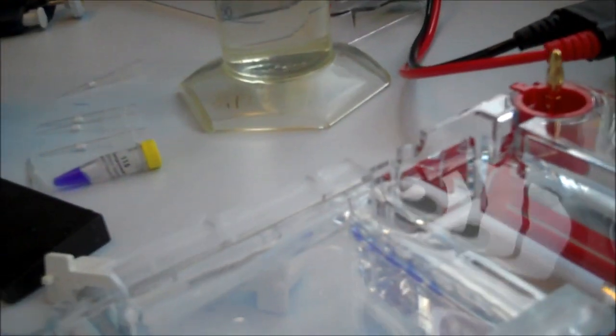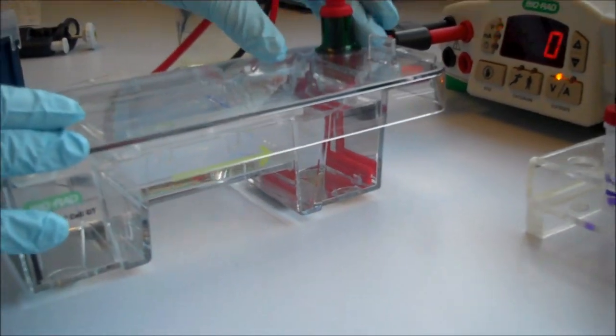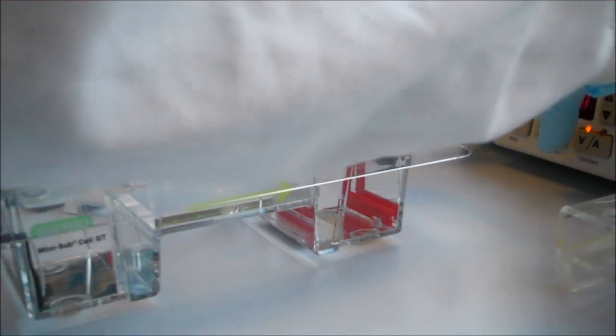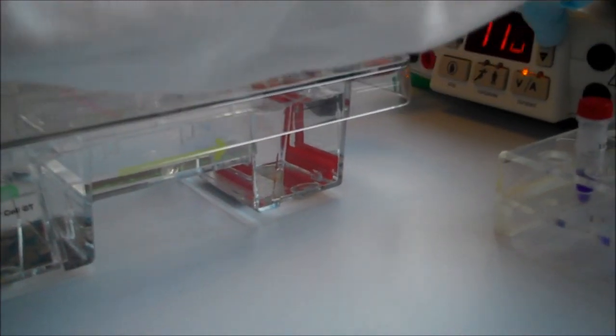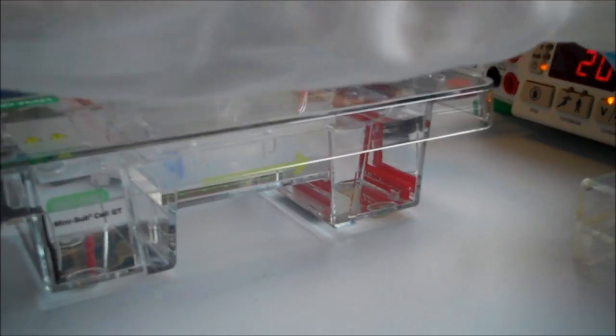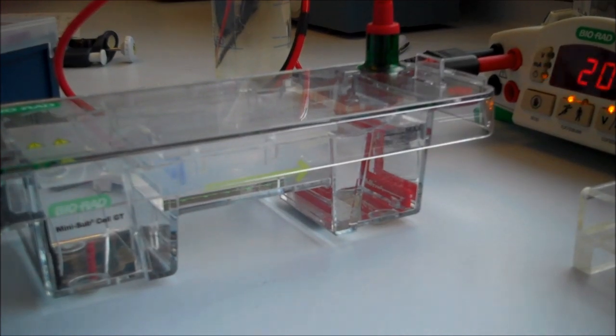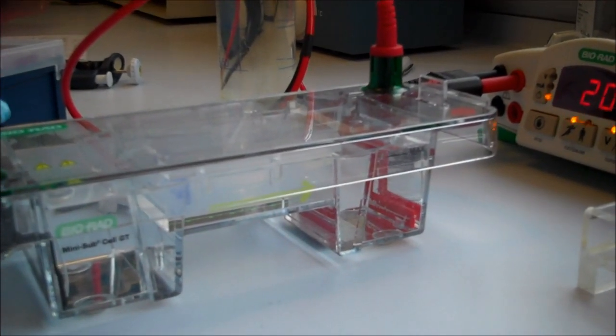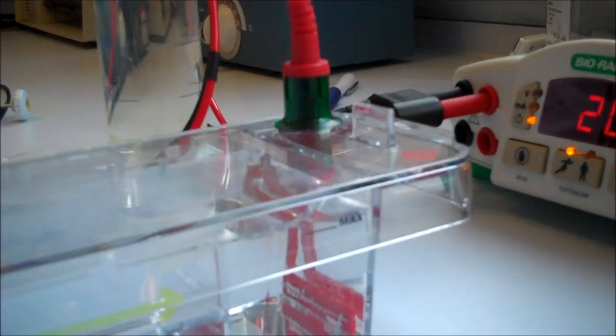So now that the gel has been filled with DNA, I want to close the lid here. And set the voltage. And then I can also set the time so we can set this for example for 20 minutes. And run the gel. And as you can see, bubbles are forming where the electrodes are. So that basically means that the tank is properly set and that the gel will run.